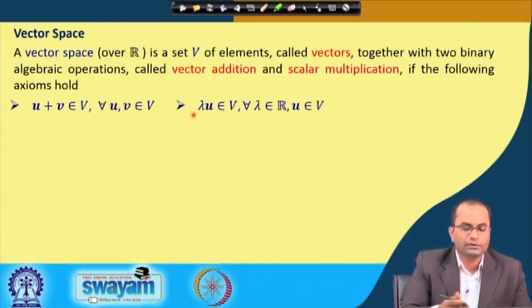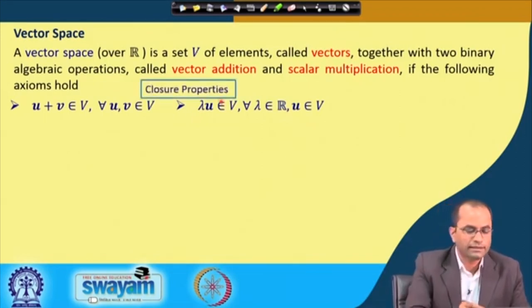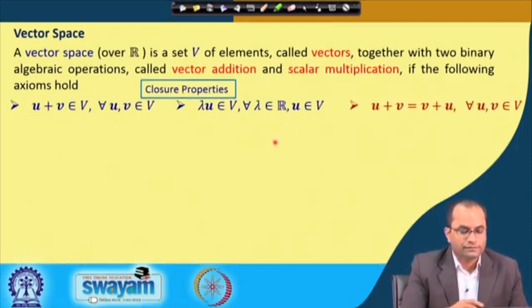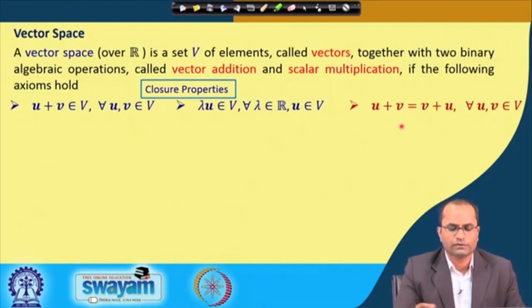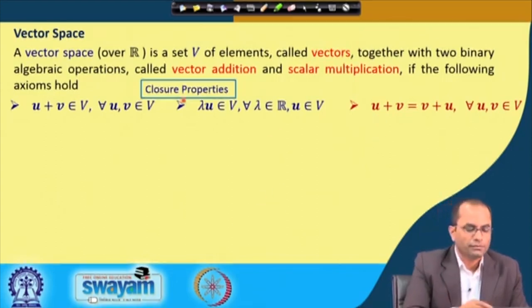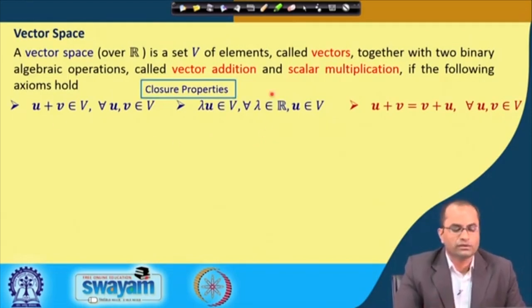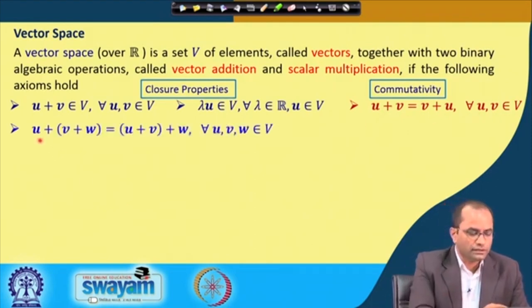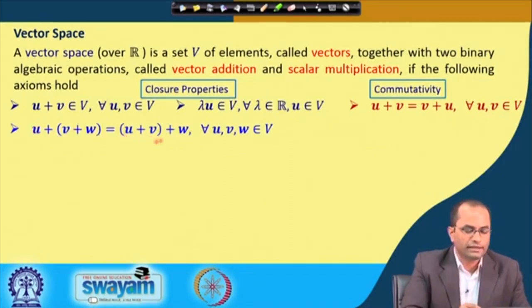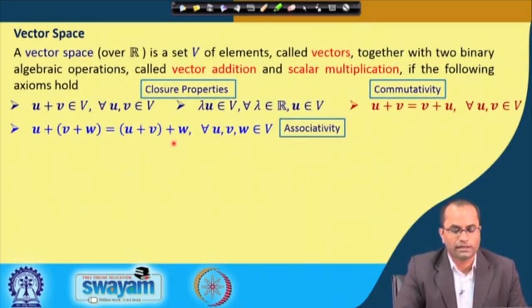For any U, lambda·U must be in the set V. These are called the closure properties of the set. There are many more properties which are not as critical in our discussion but are stated for completeness. The third one is that U + V = V + U for any elements of V — this is the commutativity property. Another is that (U + V) + W = U + (V + W) — this is the associativity property.